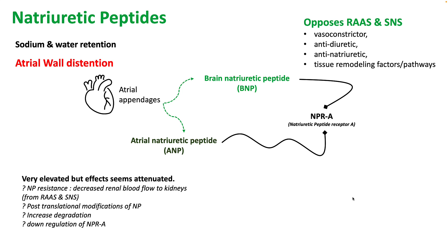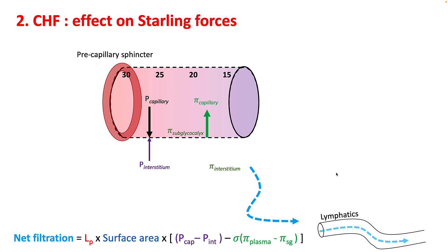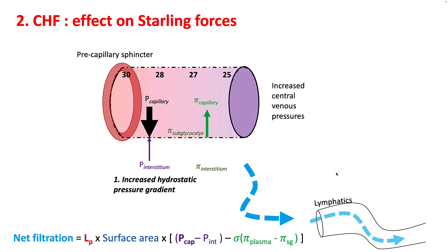These peptides are metabolized by peptidases and proteases into inactive natriuretic peptide fragments. We'll see in a different lecture how manipulating this pathway can help manage your heart failure patient better. Let's now look at the effect of heart failure on Starling forces. In a previous lecture we understood that your pre-capillary sphincter controls the peak capillary pressure.